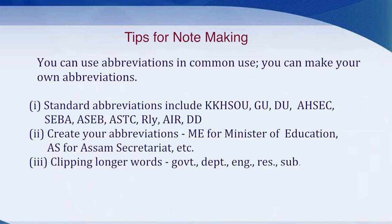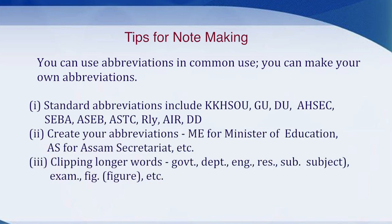Tips for notemaking. First, you can use abbreviations in common use, or you can make your own abbreviations. Standard abbreviations include KKHSOU, GU, DU, AHSEC, SEBA, etc. You can also create your own abbreviations — for example, ME for Minister of Education, AS for Assam Secretariat, etc. Third, clipping longer words — for example, government can be written as GOVT., department as DEPT., etc.